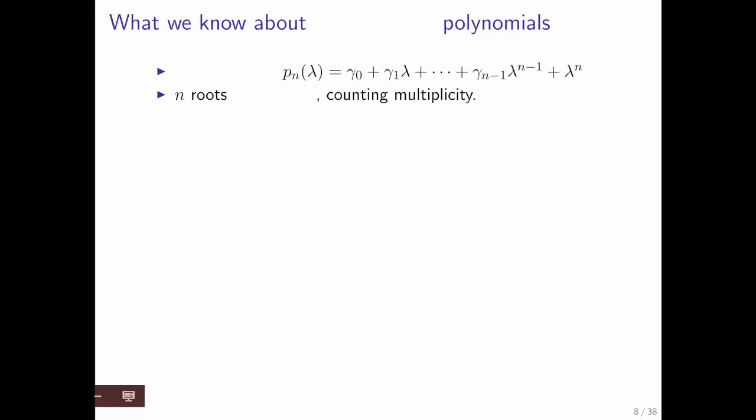We learned in high school that such a polynomial has n roots, although some of the roots may be equal to each other, so we state it has n roots counting multiplicity. It has k distinct roots, where k is less than or equal to n. We can factor any polynomial into these factors, lambda minus a root, raising each of those factors to some power. Adding all of those powers together has to give us n, the degree of the polynomial.